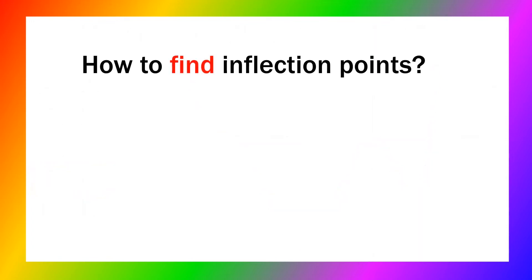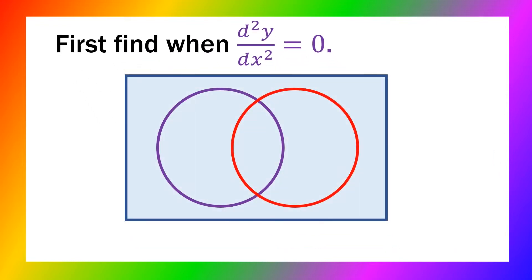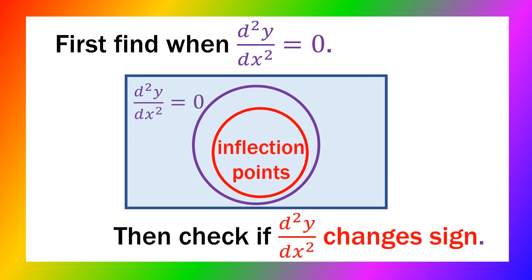To actually find a point of inflection, we start by finding where the second derivative is zero. But that's just the first step. Second derivative being zero does not guarantee an inflection point. We still need to check whether it actually changes sign.